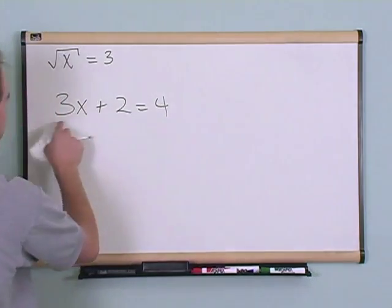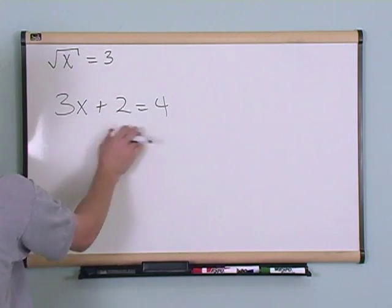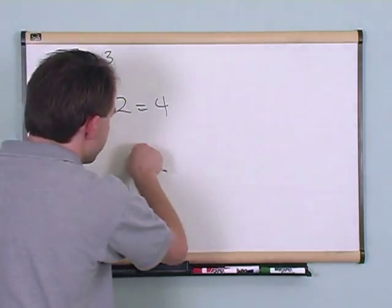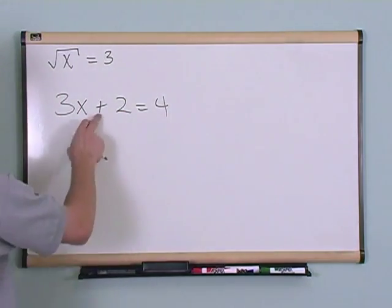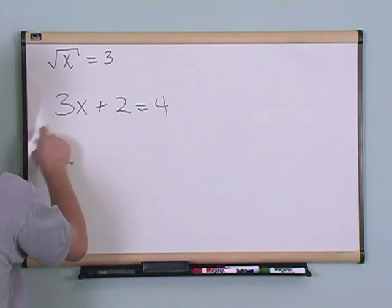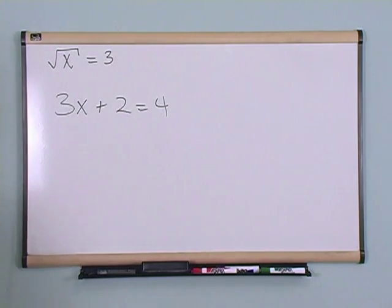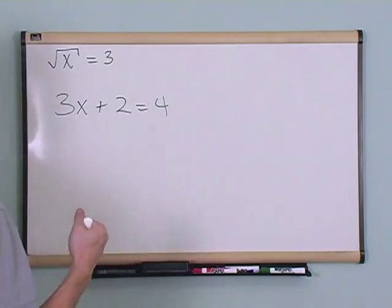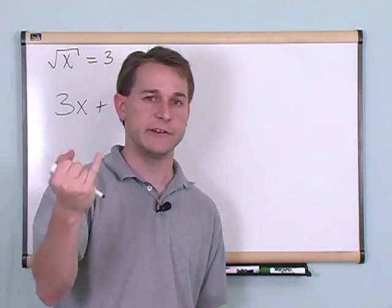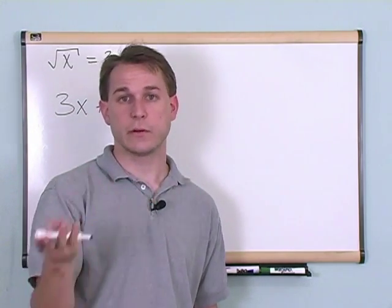Notice what we're doing here is, in order to get x by itself, we're doing the opposite of the operation here on the board. So because this is a plus 2, in order to move it over we just subtract 2. That's the opposite of addition and subtraction. To get rid of the 3 here, which is multiplied by the x, we do the opposite of multiplication, which is division. So solving equations is almost entirely about knowing what the opposite thing is. The opposite of addition is subtraction, the opposite of multiplication is division, and so on and so forth.